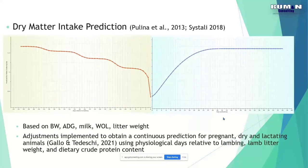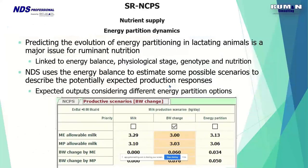The user has control over energy partition. With small ruminants, there is much wider genetic variation and it is harder to estimate partitioning of energy and protein precisely. The user chooses the most likely scenario for each specific case — options include partitioning energy mainly to milk, to body weight change, or between milk and body weight.